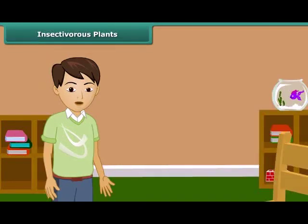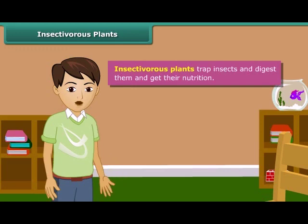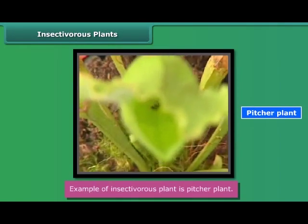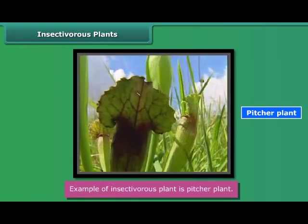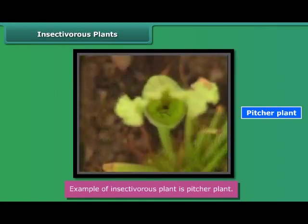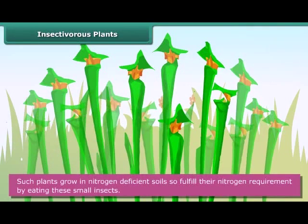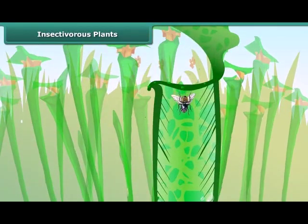The next category is insectivorous plants. There are a few plants which can trap insects, digest them, and get nutrition — for example, pitcher plants. These plants can synthesize their own food by photosynthesis, but they grow in nitrogen-deficient soils. So such plants fulfill their nitrogen requirement by eating small insects, and hence are called insectivorous plants.